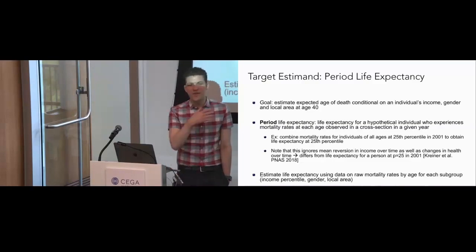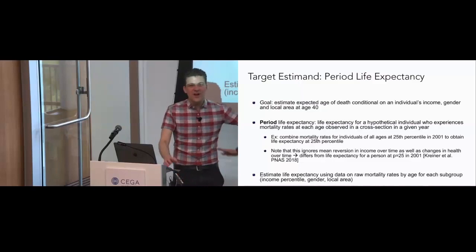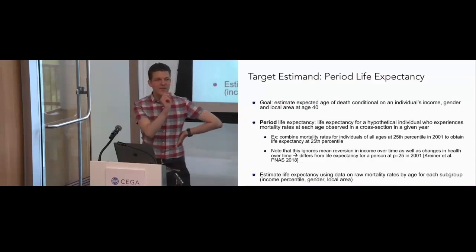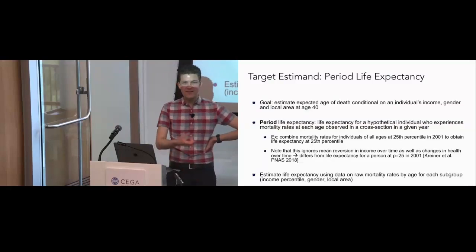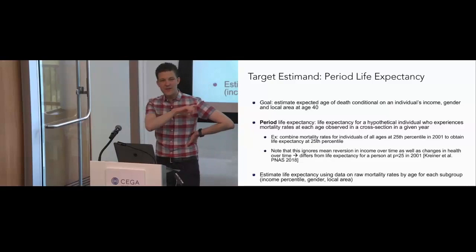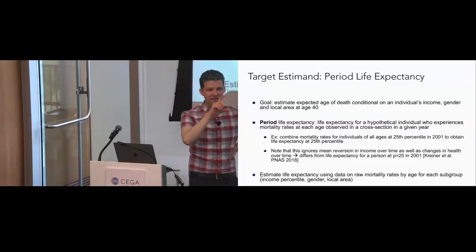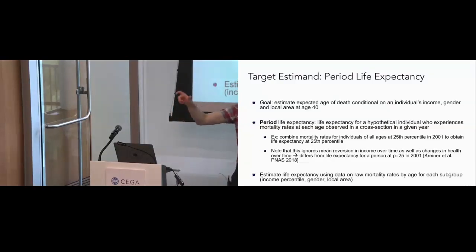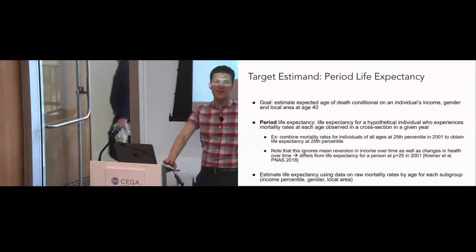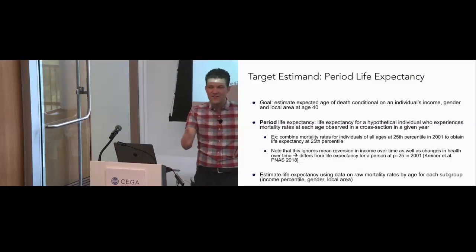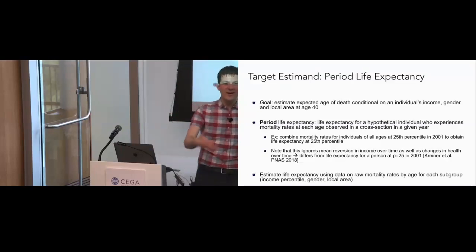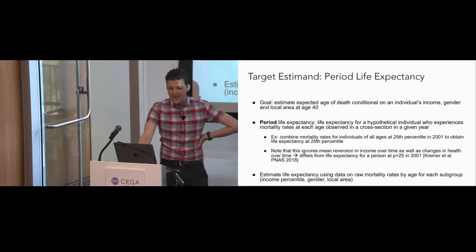Cohort life expectancy discussions typically refer to people born in 1940 or earlier. What we're usually talking about is period life expectancy — a hypothetical person who experiences the mortality rate at each age observed across the population in a given year. For example, if a news article said life expectancy fell by three years in 2020, that doesn't mean you should expect to live three fewer years. That's someone who experienced every year of their life in the worst timeline in 2020 that would have had an expected longevity three years shorter.